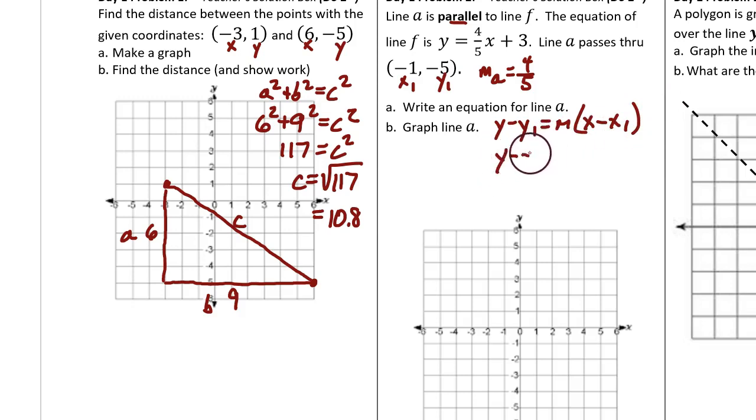For y1, put in negative 5. For m, put in 4 fifths. And for x1, put in negative 1. All of the double negatives can be written as positive signs, which will create the final answer.